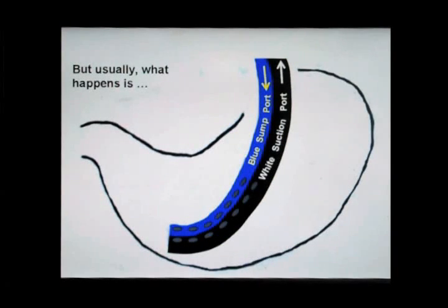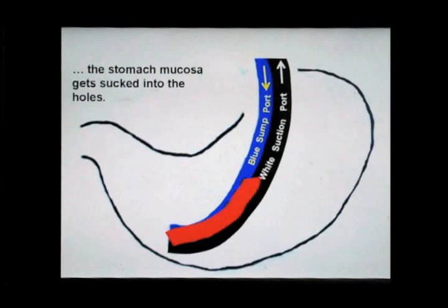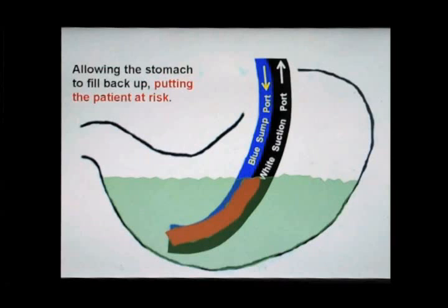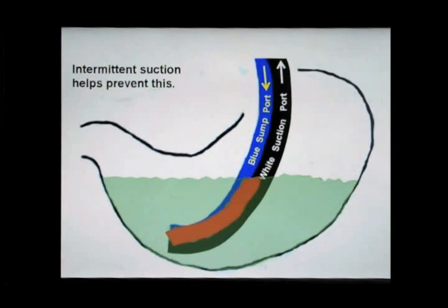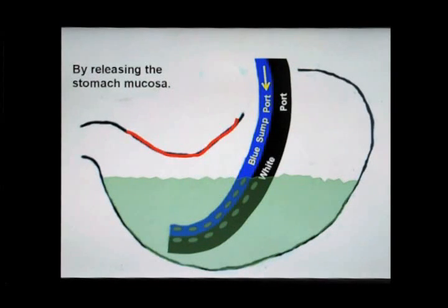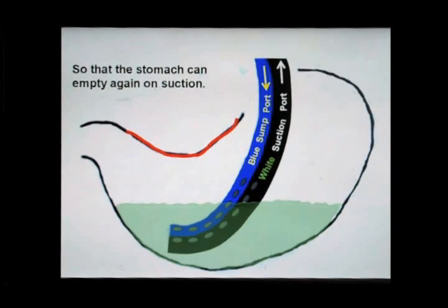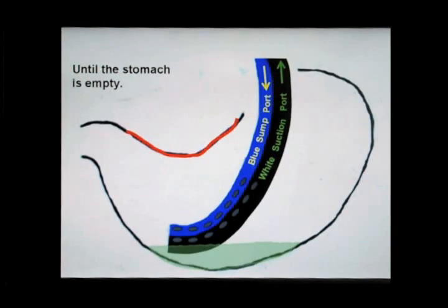But what usually happens is the stomach mucosa or lining of the stomach gets sucked onto the holes of the tube, allowing the stomach to fill back up and putting the patient at risk for aspiration. Intermittent suction helps prevent this by releasing the stomach mucosa temporarily so that the stomach may empty again until the stomach is empty.